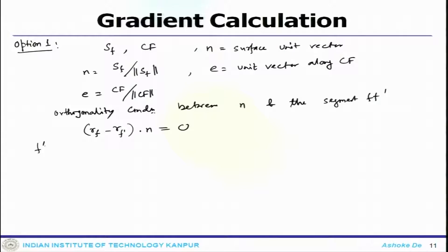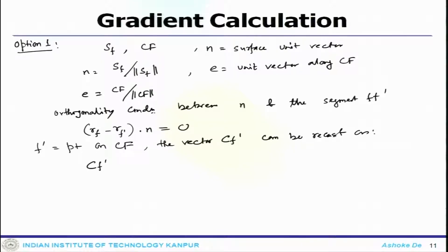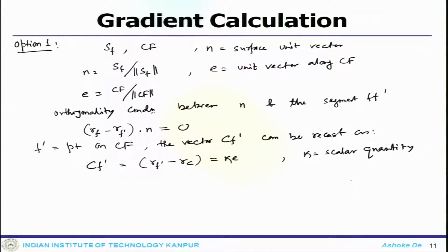Since f prime is the point on Cf, the vector Cf prime can be recast as the vector Rf prime minus Rc equals K times E, where K is a scalar quantity.